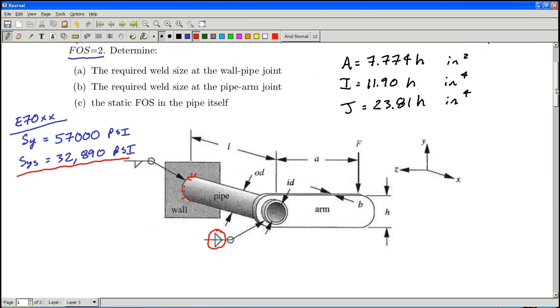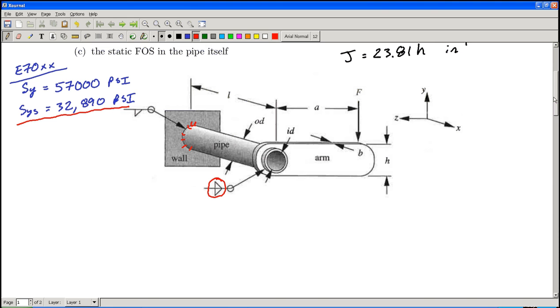I'm going to start with the weld between the wall and the pipe, part A. I'm just going through the forces for this. I've got force F acting down, which means I absolutely have to have a force F acting up, so I'm going to have a direct shear.